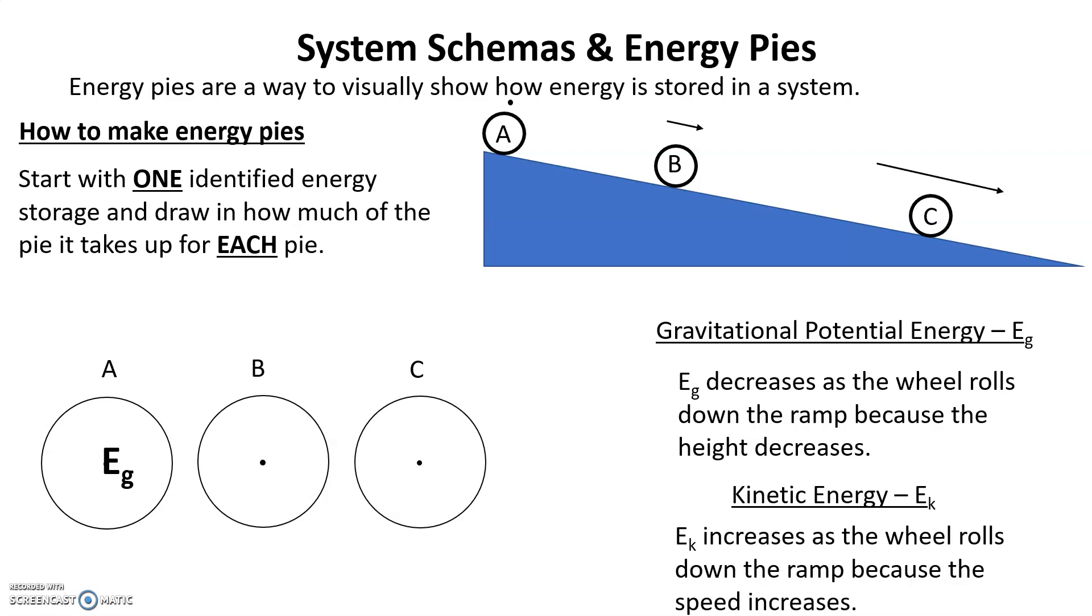But at B, it's not as high, so it's lost some height, so there's going to be less EG. Notice I've cut out a wedge. The bigger part is EG still. Then at C, it's much lower, so it's lost a lot of height and lost a lot of EG. So now, it's going to have a very tiny wedge that has EG in it.